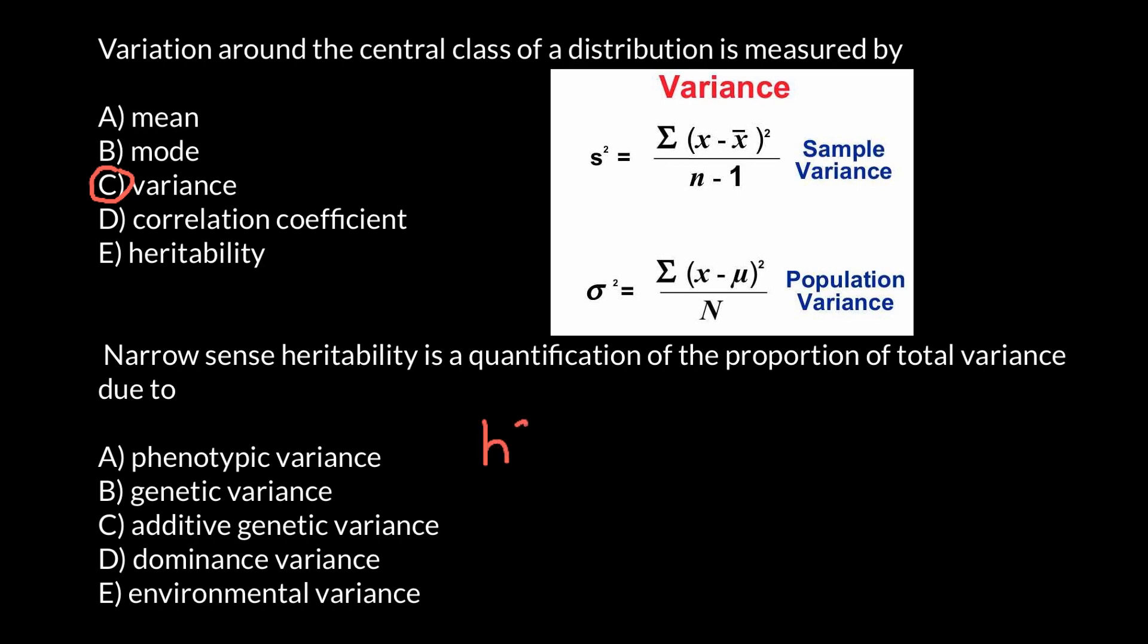h small squared stands for the narrow sense heritability and broad sense heritability h capital squared. So narrow sense heritability would be variance additive divided by variance total or variance phenotypic.